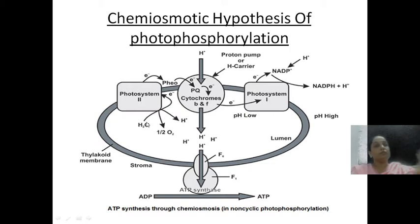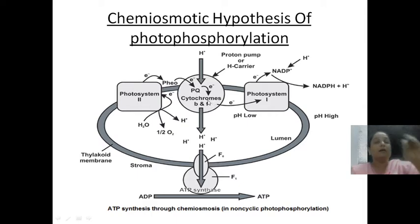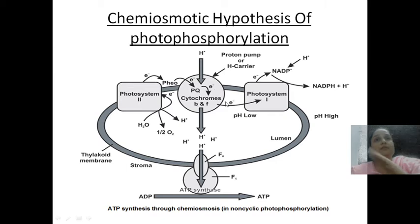Because of the hydrolysis of water, hydrogen ions are going to be released inside the lumen, along with the release of half a molecule of oxygen. So the concentration of hydrogen ions inside the lumen is increasing. The electrons released during this process are accepted by photosystem 2, then transported to the primary electron acceptor pheophytin, then to plastoquinone, and then to cytochrome B and F.